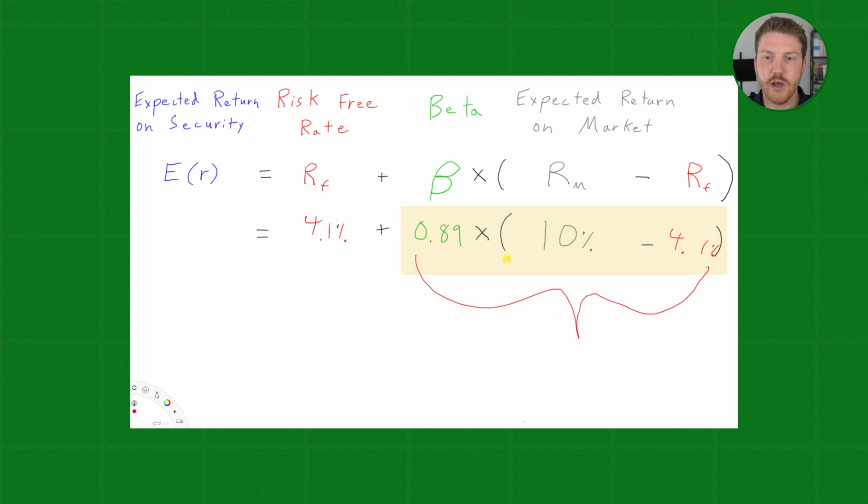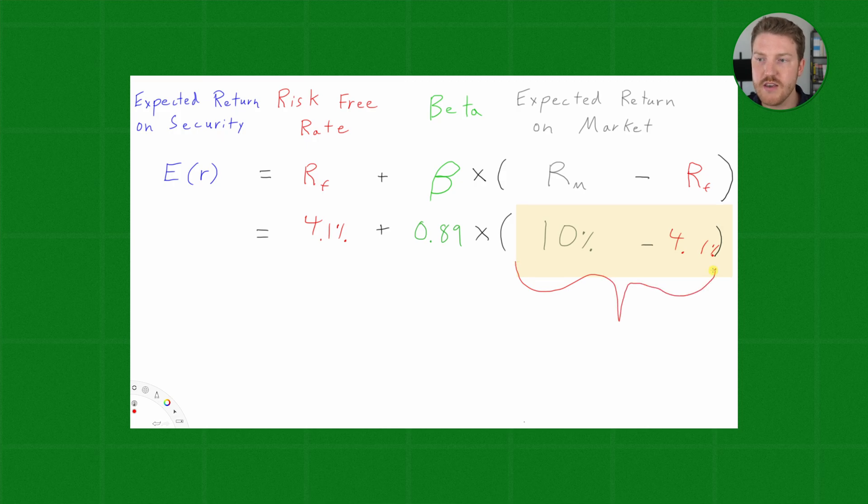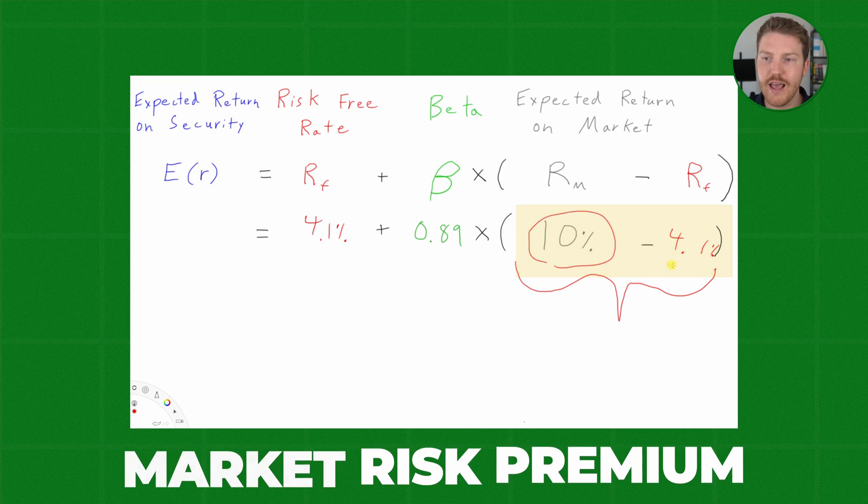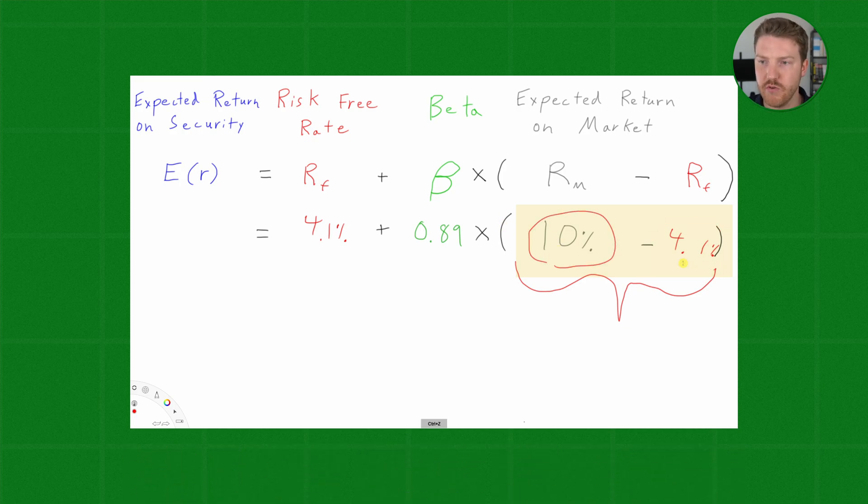Now, if we zoom out even closer, and we remove the beta, what is this component of this formula? This is the market risk premium, because it is the amount that I demand as an investor to return in excess of this risk-free rate.